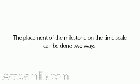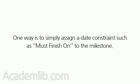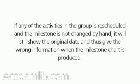There is one risk in creating these milestone charts. The placement of the milestone on the time scale can be done two ways. One way is to simply assign a date constraint such as 'must finish on' to the milestone. If any of the activities in the group is rescheduled and the milestone is not changed by hand, it will still show the original date and thus give the wrong information when the milestone chart is produced.